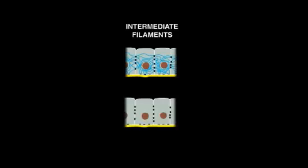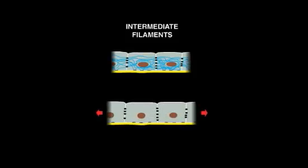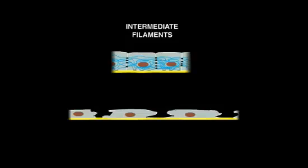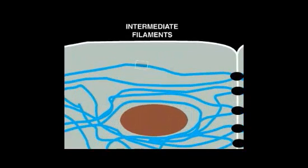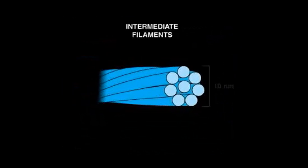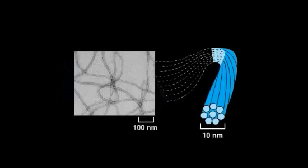These cables of intermediate filaments have a high tensile strength. Without these filaments, stretching or pressure on the epithelial sheet would cause it to rupture. Each filament is rope-like, consisting of eight thinner strands made of a precise hierarchical arrangement of protein subunits. An electron micrograph shows the appearance of intermediate filaments assembled in a test tube.